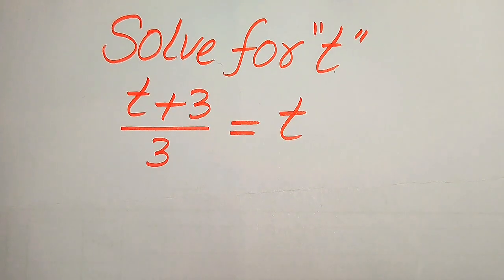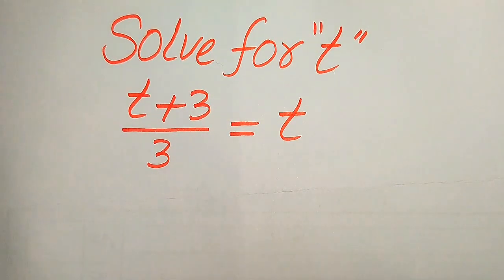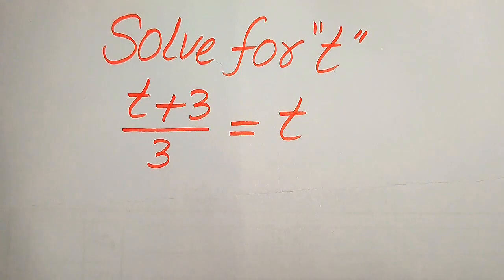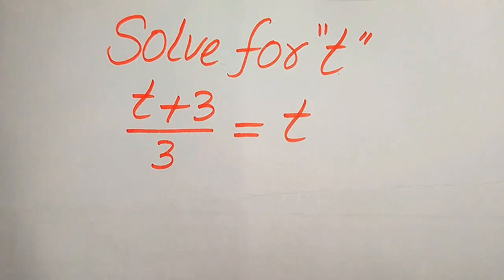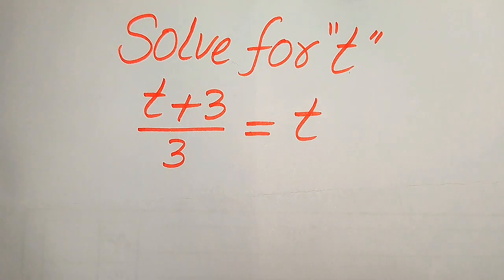Hello everyone. How to solve this problem for the values of t if we have t plus 3 divided by 3 equals t. We solve this problem for all the values of t. Here, first we find all the roots of this equation, and at the end we will verify which of the roots are solutions and which are extraneous roots of the given equation.